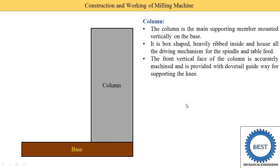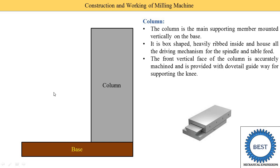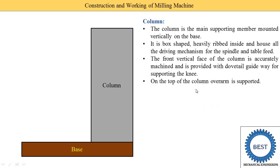The front face is provided with a dovetail guideway for supporting the knee. This type of vertical guideway is provided on this surface, and on this vertical dovetail shape the knee is mounted. The knee moves up and down on the surface of the column. On the top of the column, the overarm is supported.